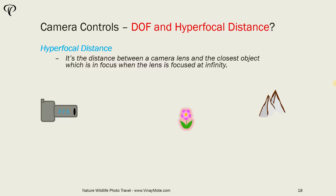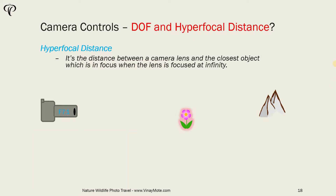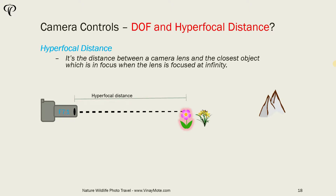Once you focus on a particular flower at a distance, if your lens has a focus ring it will show you where you're focusing. If you're focusing very far, you're basically focusing your lens at infinity. So let's say that's the flower you want to focus on — once you focus on that flower, you are getting the flower clearly visible and also the mountain at the background clearly visible, which means your lens is set to infinity. The distance between that flower and your lens is going to be the hyperfocal distance.